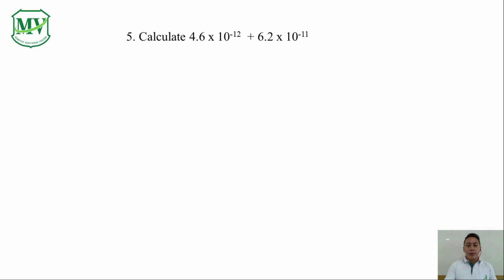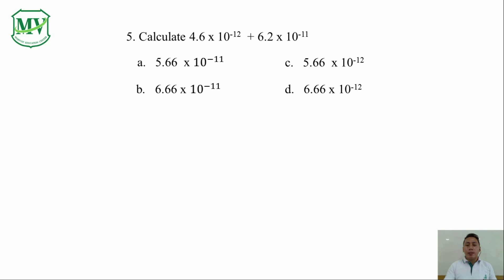Number 5. Calculate 4.6 x 10 raised to the power of negative 12 plus 6.2 x 10 raised to the power of negative 11. A: 5.66 x 10 raised to the power of negative 11. B: 6.66 x 10 raised to the power of negative 11. C: 5.66 x 10 raised to the power of negative 12. D: 6.66 x 10 raised to the power of negative 12.